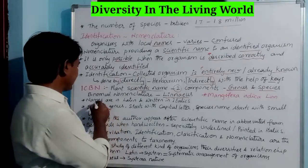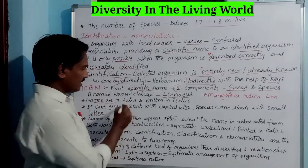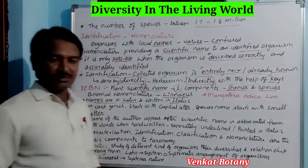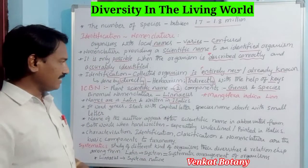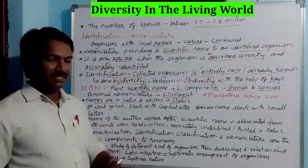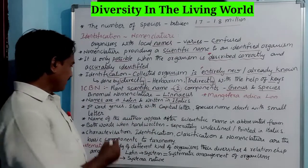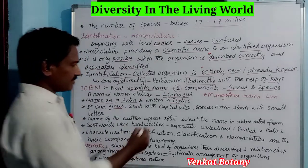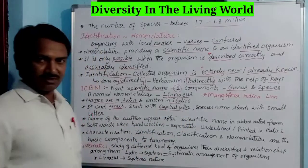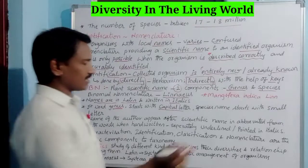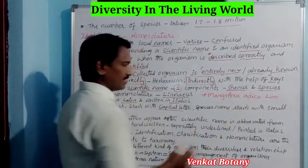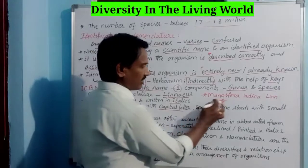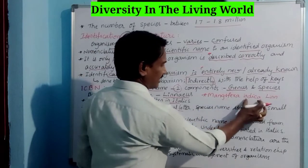Scientific names are in Latin and written in italics. We choose two words: the first word represents the genus and starts with a capital letter, and the second word represents the species. For example, Mangifera is the genus and indica is the species. In the genus word, the first letter is capital; in the species word, the first letter is small.